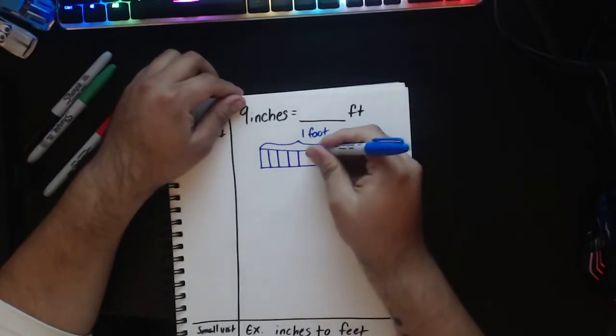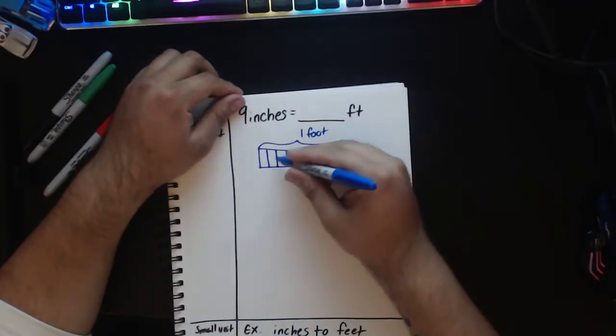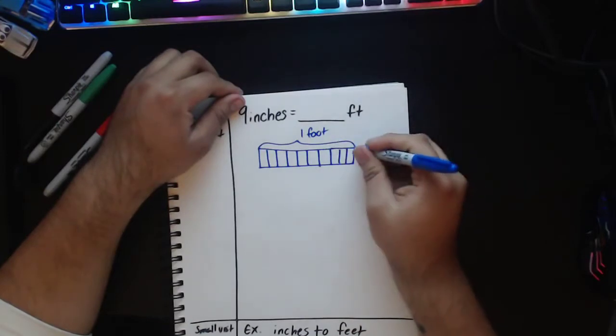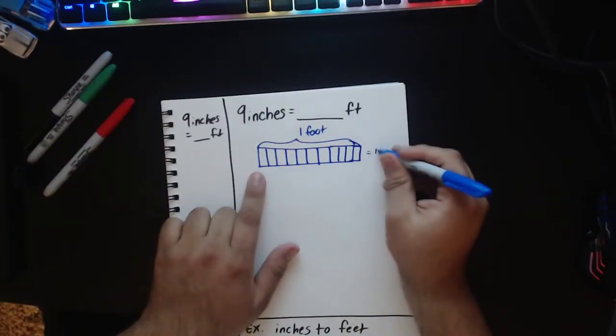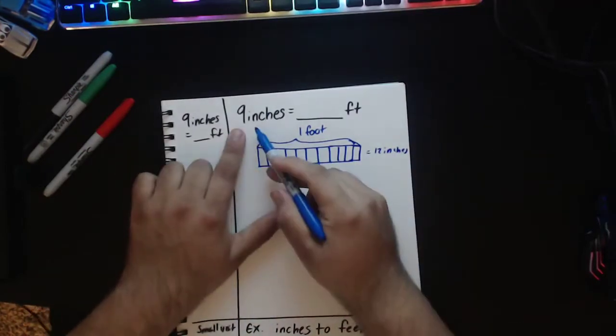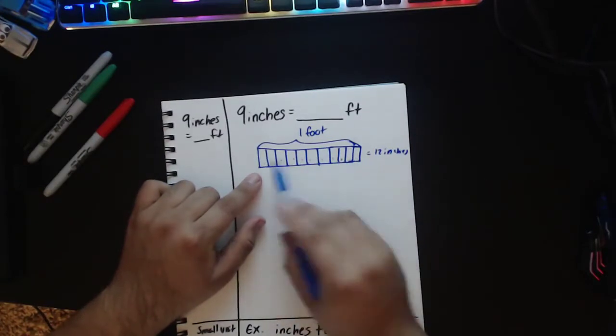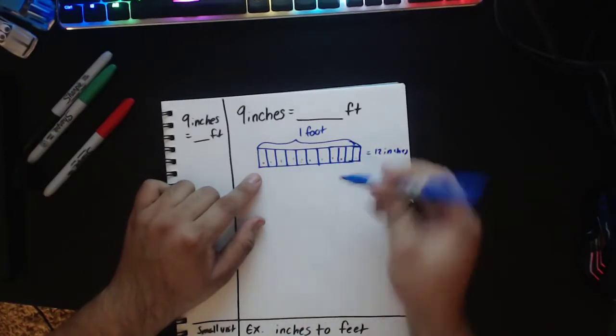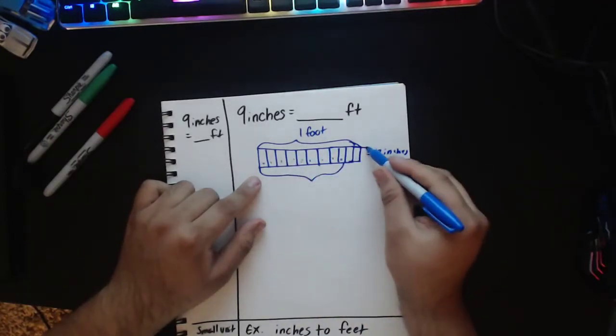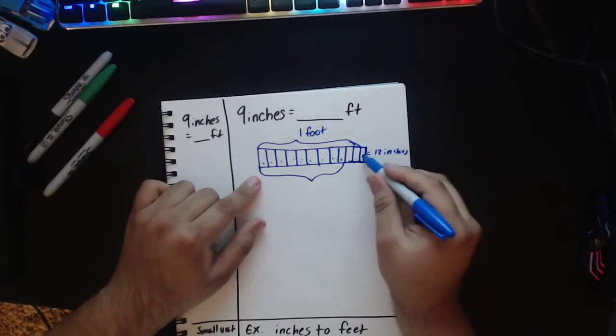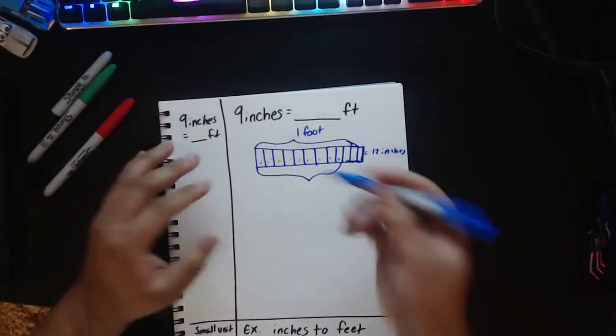And I know in 1 foot I have 12 inches. So I should have [draws and counts 12 parts]. So now we have 12 parts, which is equal to 12 inches. But we only have 9 inches. So let's count up 9. [recounts and marks] So now I have 12 parts in my foot. But I only have 9.